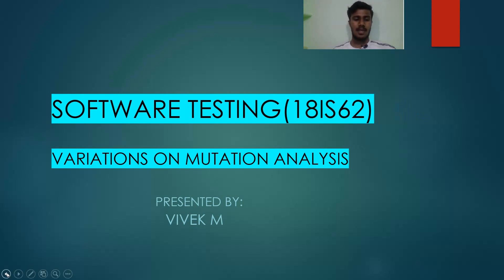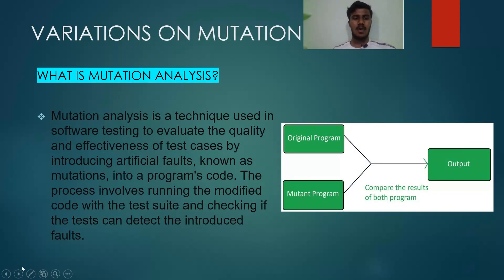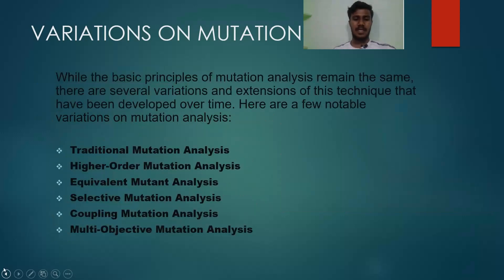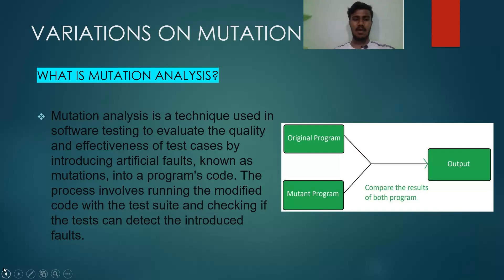So what is mutation analysis? Mutation analysis is a technique used in software testing to evaluate the quality and effectiveness of test cases by introducing artificial faults — errors known as mutations — into a program's code. The process involves running the modified code with the test suite and checking if the test cases can detect the introduced faults.